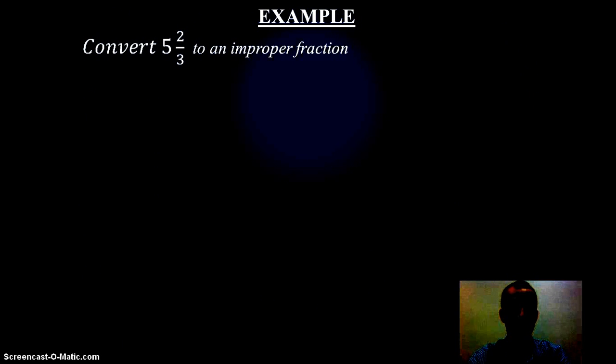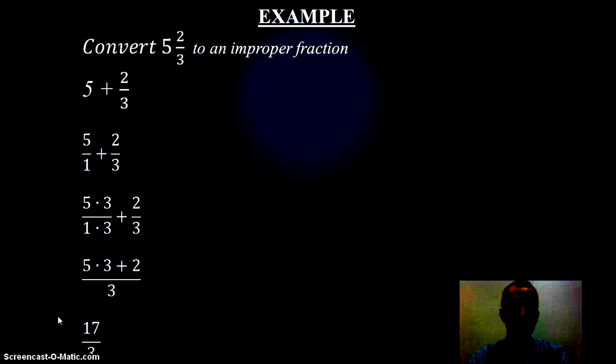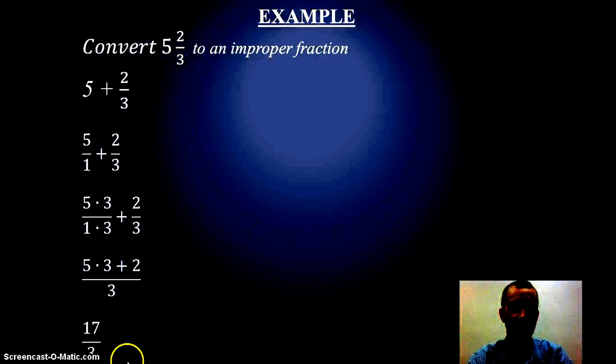So say I have five and two-thirds and I want to convert that into an improper fraction. I'm going to split them apart and say I'm going to change my five to five over one. What's my common denominator? In this case it would be three. So I need to multiply this by three, so I get fifteen-thirds plus two-thirds. And that's going to give me seventeen-thirds. So five and two-thirds is the same as seventeen-thirds.